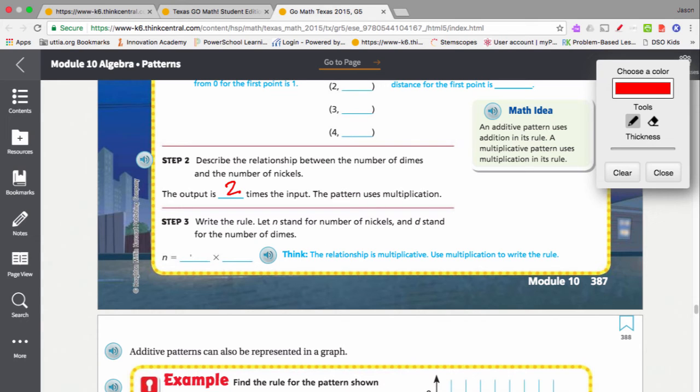So that means that our pattern, if d stands for dimes, the pattern is n equals 2 times d. Now, something else I want you to notice about this.